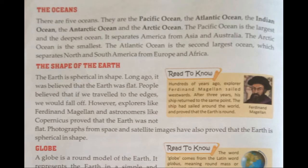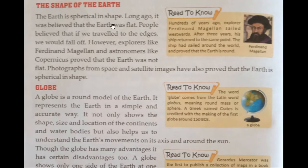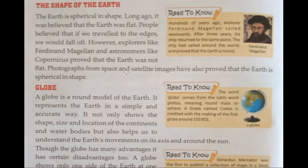The shape of the Earth. The Earth is spherical in shape. Long ago it was believed that the Earth was flat, and people believed that if we travelled to the edges we would fall off. However, explorers like Ferdinand Magellan and astronomers like Copernicus proved that the Earth was not flat. Photographs from space and satellite images have also proved that the Earth is spherical in shape.